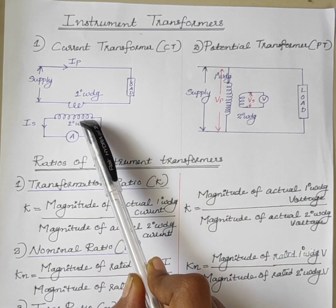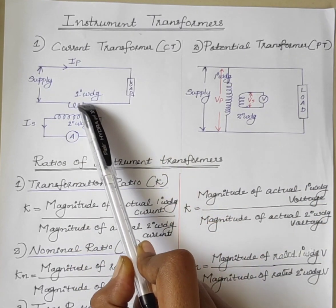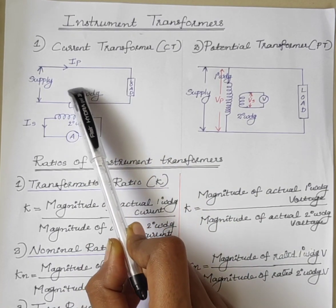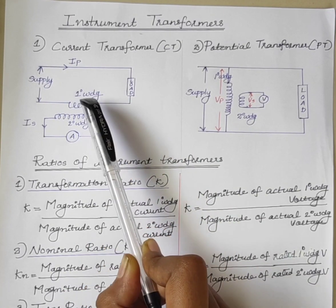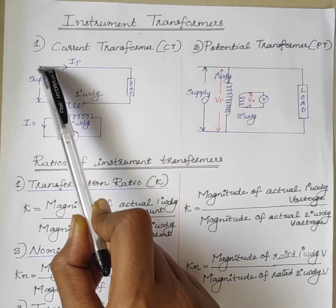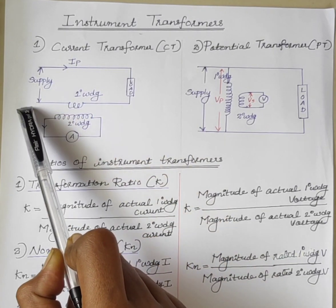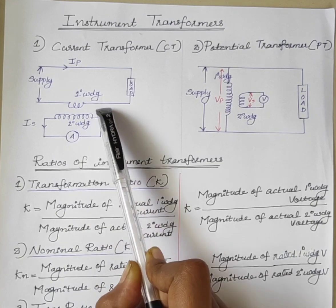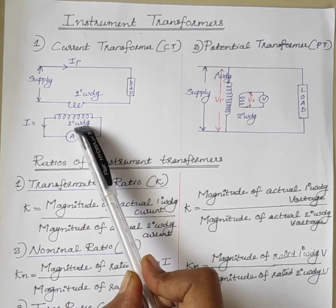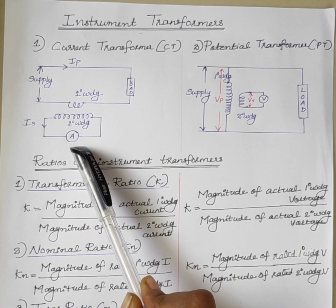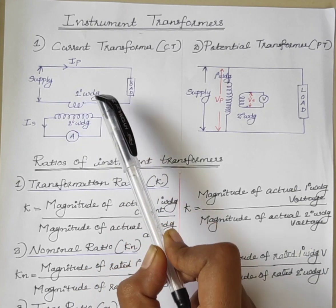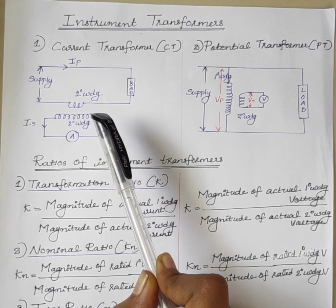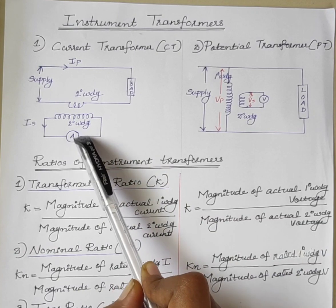Figure 1 shows current being measured by a current transformer. The primary winding is connected so that the current being measured passes through it, and the secondary winding is connected to an ammeter. The current transformer steps down the current to the level of the ammeter.